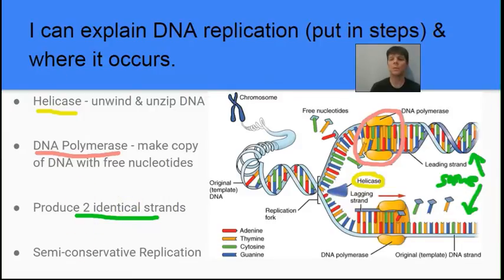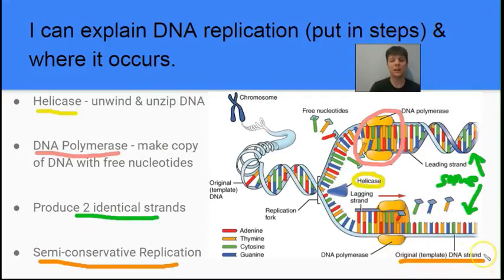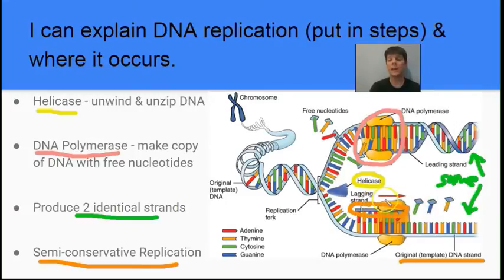Adenine is always pairing with thymine, and guanine is always pairing with cytosine. It's important to remember that this process is semi-conservative — the two new strands that are produced each contain half of the old strand and half of the newly synthesized DNA.